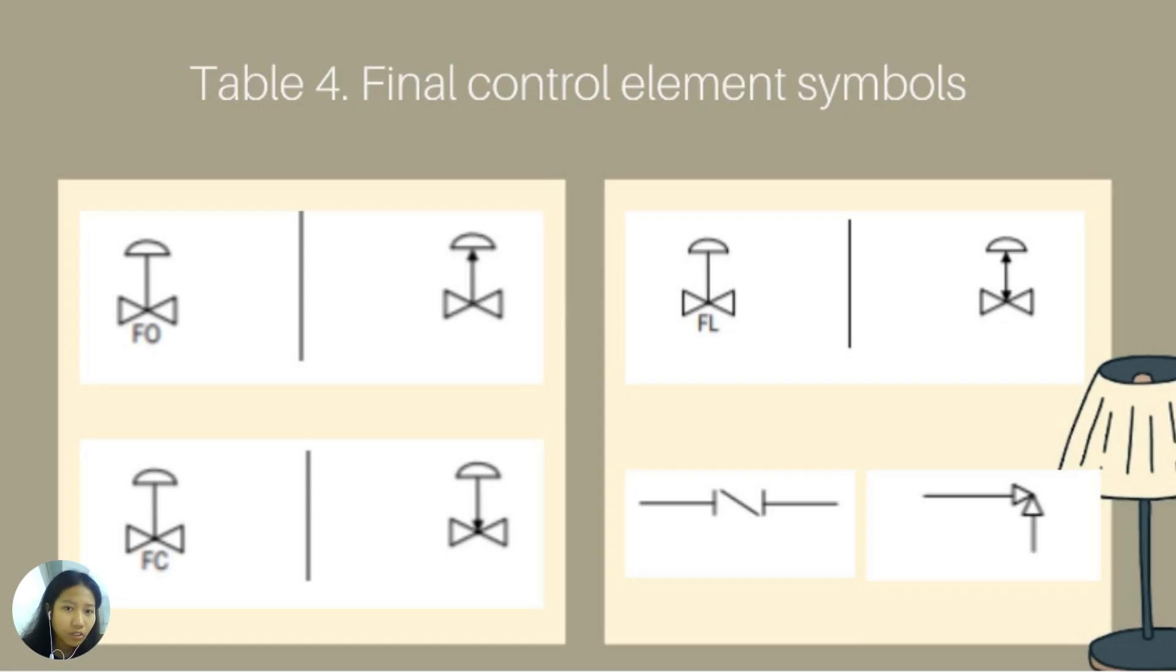For the next topic, which is the final control element symbols. The first picture is the symbol used for the fail open or the FO. When the power or air pressure is removed from the valve, the valve opens, and this is known as the fail open. For the second picture, it is the fail closed or the FC. When the signal is lost, the valve closes, which is known as the fail closed. If the valve was being used to reduce pressure, such as for suction control on air compressor, a fail closed valve will safeguard downstream equipment from high pressure in the case of a failure. And for the third picture, when the signal is lost, a control valve in the stem is left in its last position, and it is secured in that position. The force of the flowing stream pushes the valve plug to the open or closed position in the fail lock condition, or the FL.